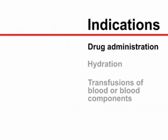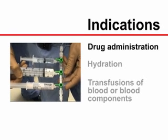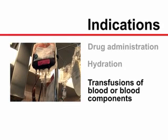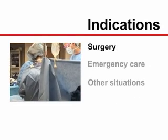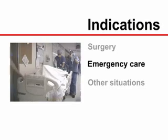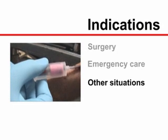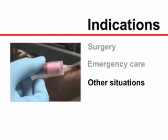Peripheral intravenous catheterization is required in a broad range of clinical applications, including intravenous drug administration, intravenous hydration, transfusions of blood or blood components, during surgery, during emergency care, and in other situations in which direct access to the bloodstream is needed.